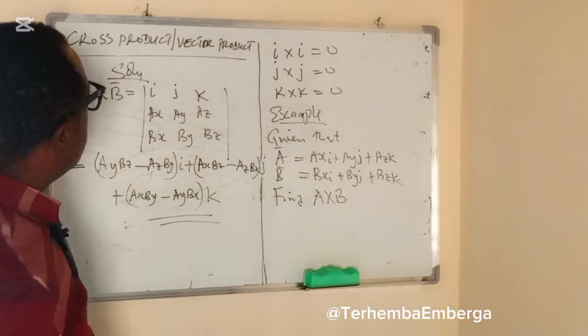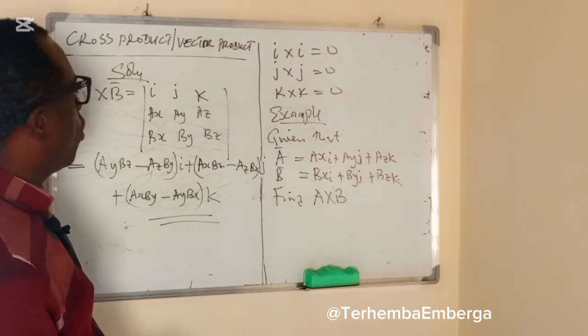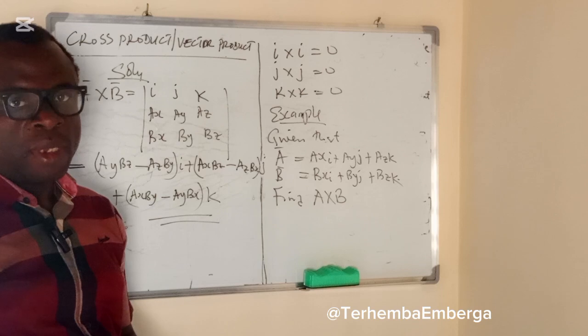That is how we'll do the cross products of two vectors. Thank you.